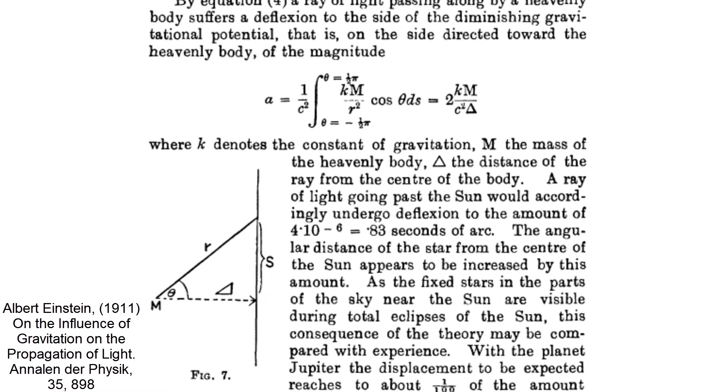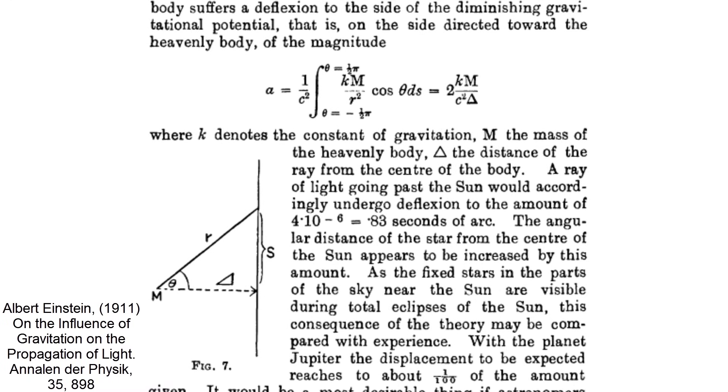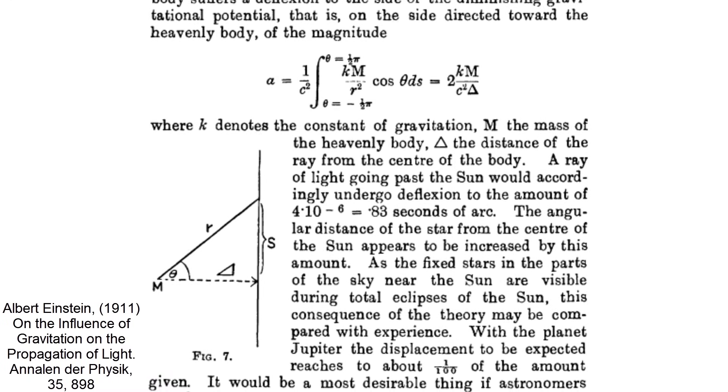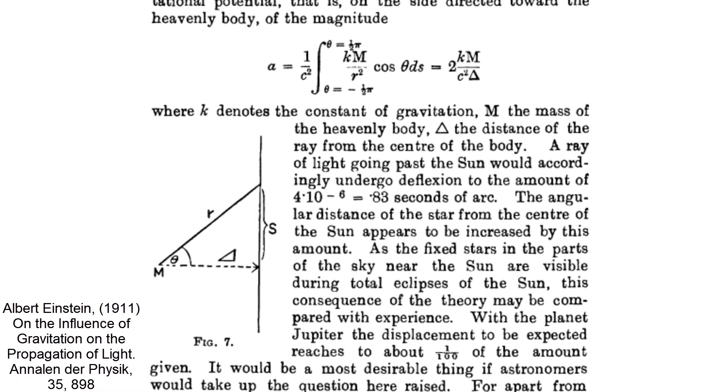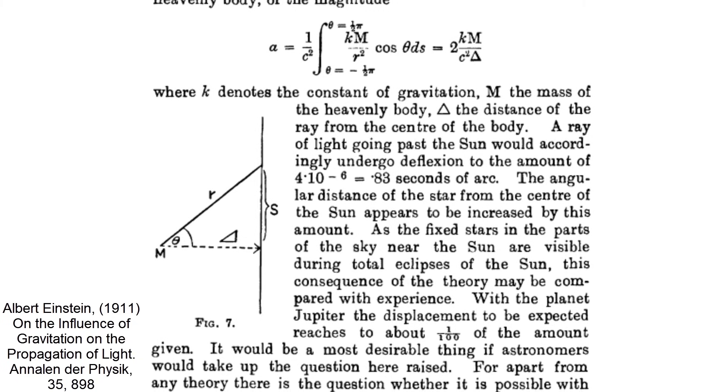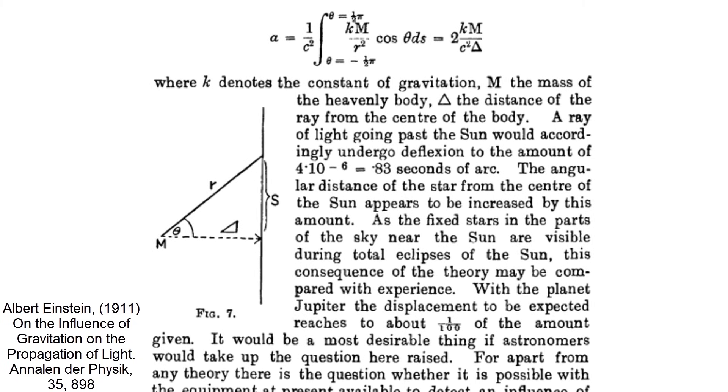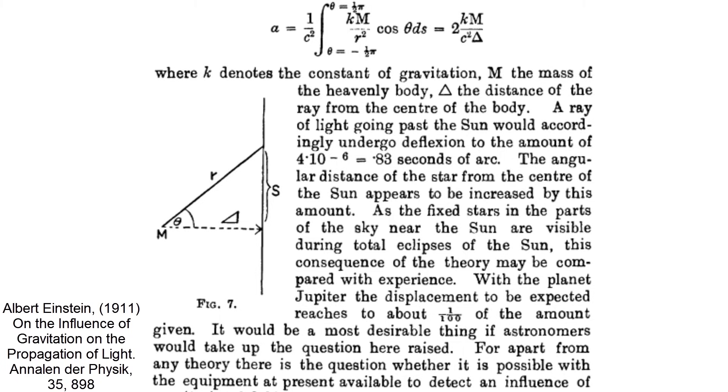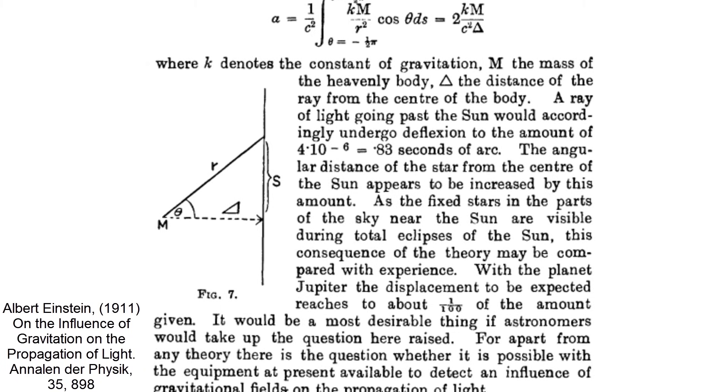Before general relativity was finalized, Einstein guessed in 1911 that if gravity affects time, then light traveling near a massive body would change direction. He calculated the deflection angle of light passing by the Sun to be 2 times the gravitational constant times the mass divided by the radius and c squared of around 0.85 arcseconds.